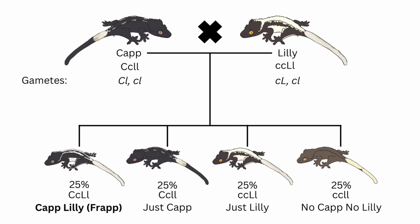The easiest and most straightforward way of making a frappuccino crested gecko is by breeding a cappuccino to a lily-white. 25% of the kits will have both genes, therefore it will be a frappuccino crested gecko. Another 25% of the kits will be just cappuccinos, another 25% will be just lily-whites, and a final 25% will have none of the genes. This is probably the easiest way of doing it and the way that most people produce frappuccino crested geckos.